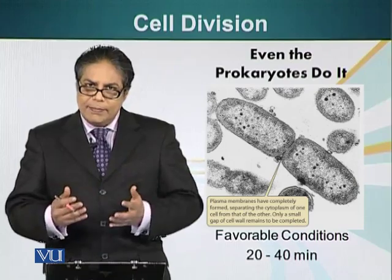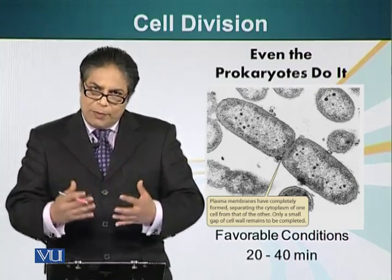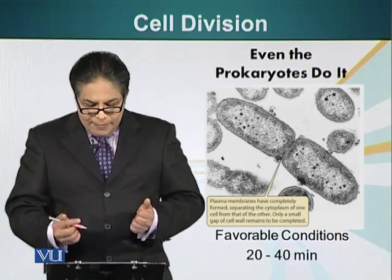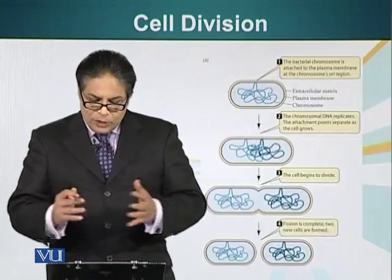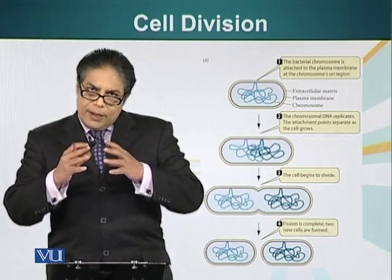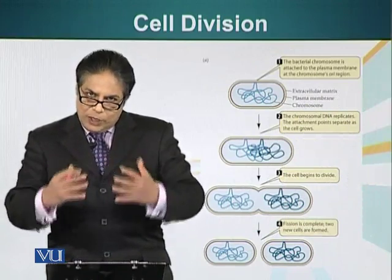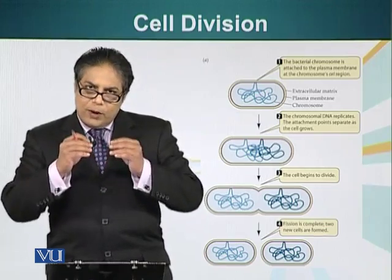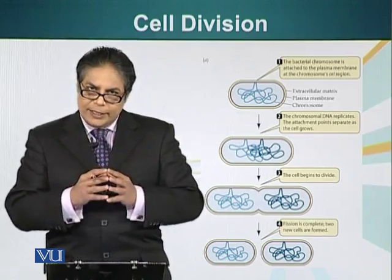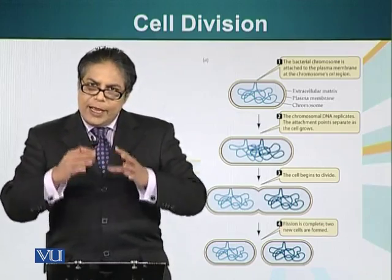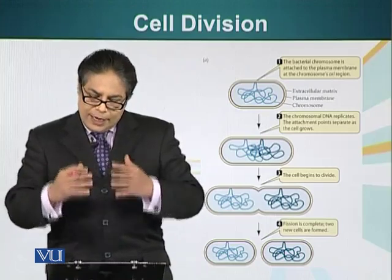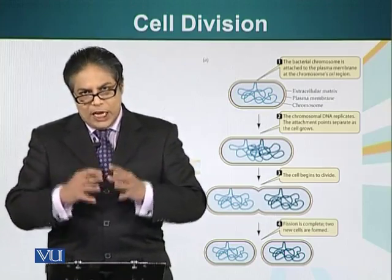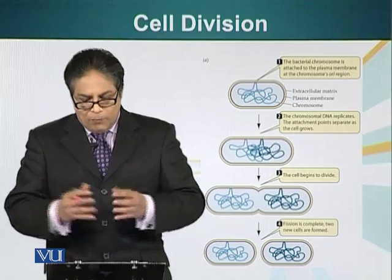Bacterial cells can divide as long as they have favorable environmental conditions — as long as you provide bacteria with food, they will keep on dividing. A special part of the membrane attaches to the bacterial DNA, where a special sequence of DNA is. This special sequence is the origin sequence — that's where DNA replication starts. The genetic information is contained in this type of polymer, the DNA.